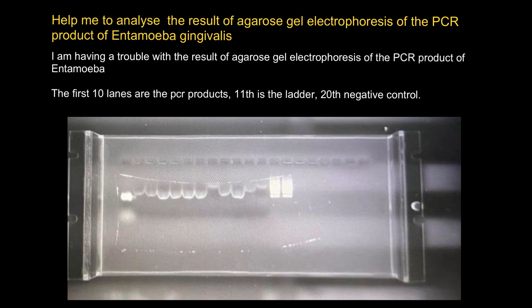I would recommend increasing the time and decreasing the voltage. Now looking at this part of the gel, it looks like we have just a cloud of primer dimers, and it also looks like this well was overloaded, so you need to decrease the amount of sample loaded.